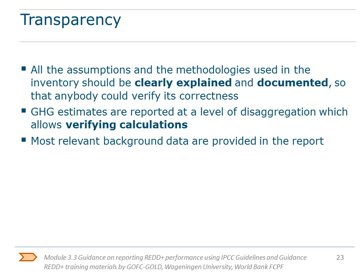Let's start with transparency. Transparency means that all assumptions and methodologies used in the inventory should be clearly explained and documented, so that anybody could verify its correctness. Estimates should be reported at the level of disaggregation which allows verification of calculations. Verification and reproducibility of the estimates are very important. Verification, according to IPCC, means comparing the reported estimates with independent estimates. It is very important that the reported information by countries is transparent enough to allow potential verification by either the technical assessment team or other third parties or stakeholders. Most relevant background data should be provided in the report or made available on a website, including where relevant calculation steps, emission factors, activity data, and potentially also satellite images that have been used.